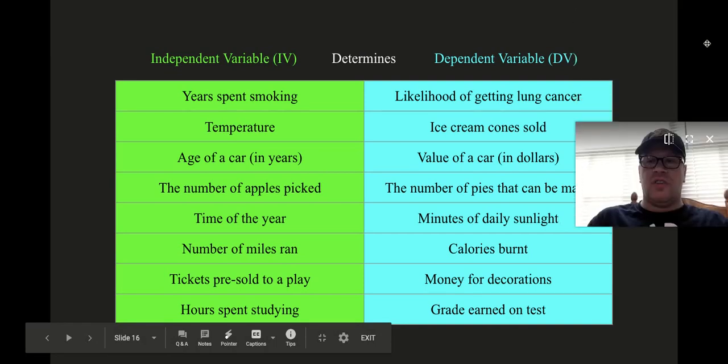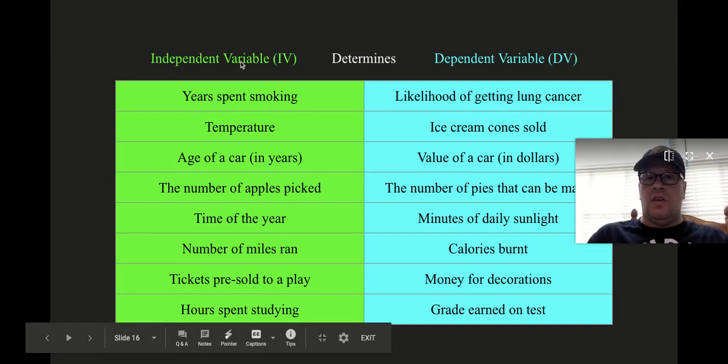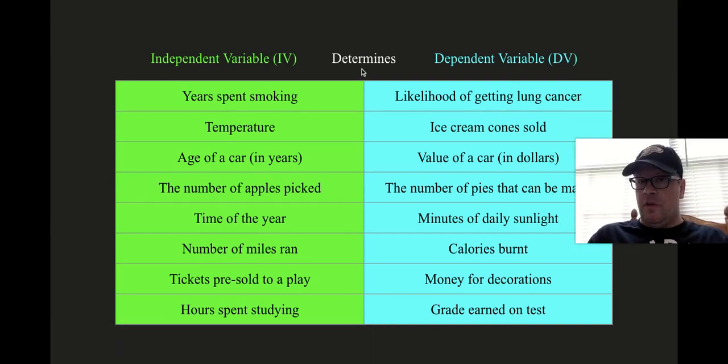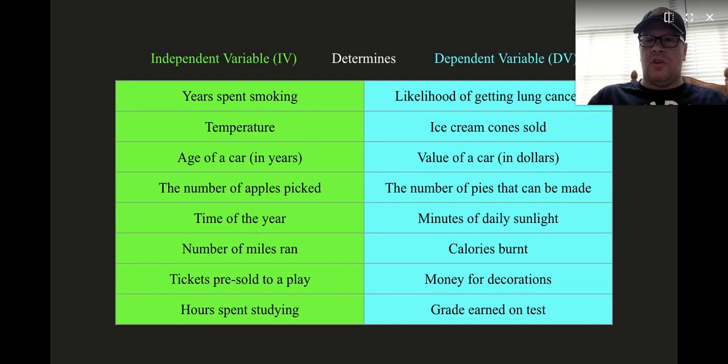All right, so this gives us a couple different examples of an independent variable determining a dependent variable. So, potentially, a link between smoking and getting lung cancer, the temperature outside and ice cream, age of a car and the value of the car, number of apples someone picks compared to the number of pies that they can make,